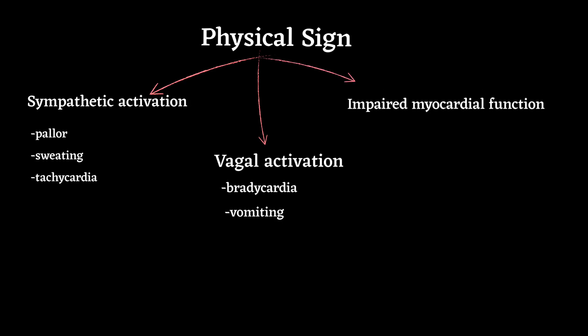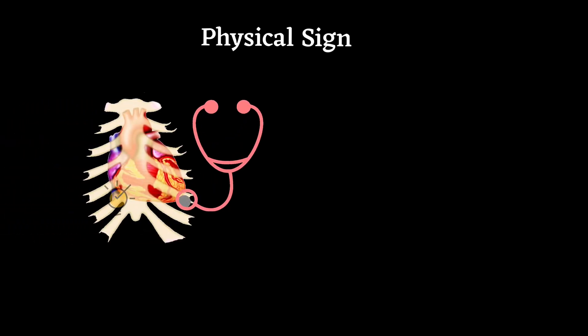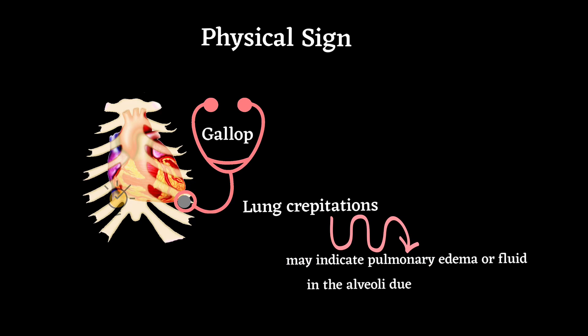On physical examination, there may be signs of sympathetic activation such as pallor, sweating, and tachycardia; signs of vagal activation including bradycardia and vomiting; and signs of impaired myocardial function such as hypotension, oliguria, and cold peripheries. On auscultation, there may be a third heart sound called a gallop. Lung crepitations may indicate pulmonary edema or fluid in the alveoli due to heart failure.